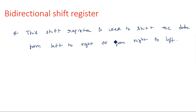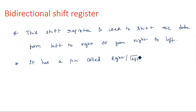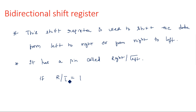How can a single shift register perform both operations? It has a pin called Right/Left-bar. Whenever the Right/Left-bar pin is equal to zero, left shift operation is performed, and when this pin is equal to one, right shift operation is performed. If Right/Left-bar is equal to one, that means R is equal to one and L-bar is equal to one, which means L is equal to zero — so left operation is not performed; right shift operation is active.